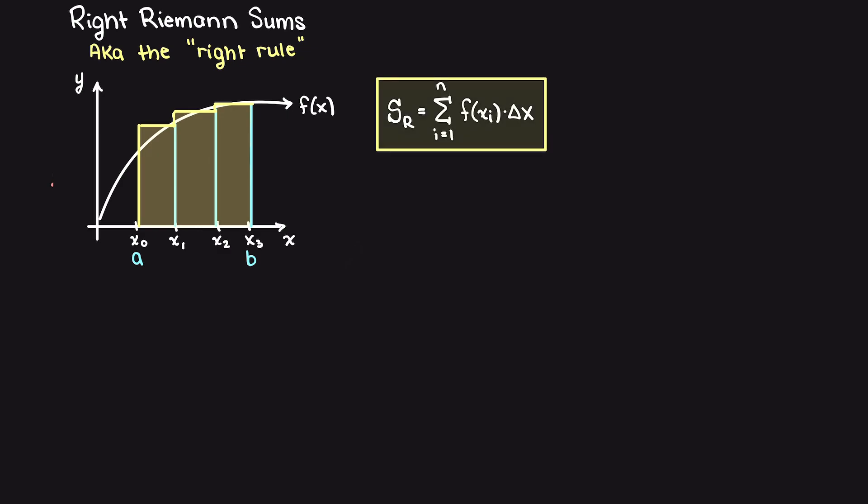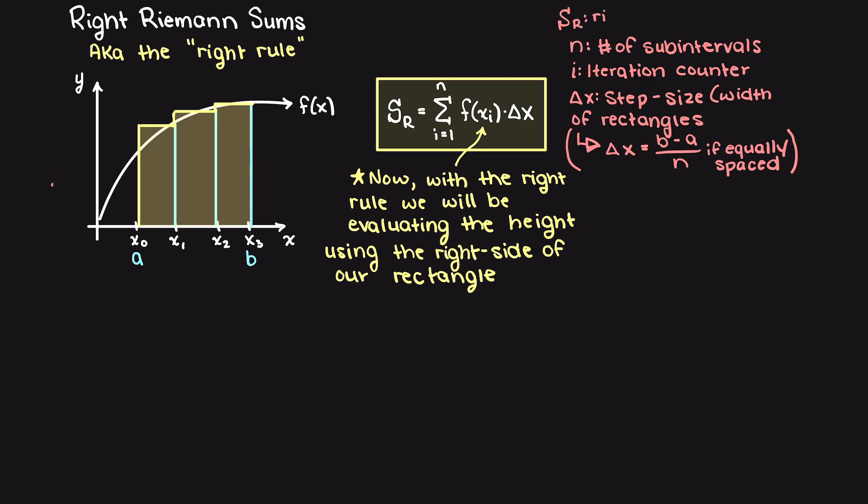Writing out the general right Riemann sums formula, you can see that we are now using xi instead of xi minus 1, as we want to begin our summation from x1 as you can see here on our graph on the left.